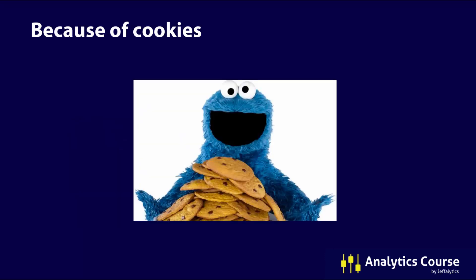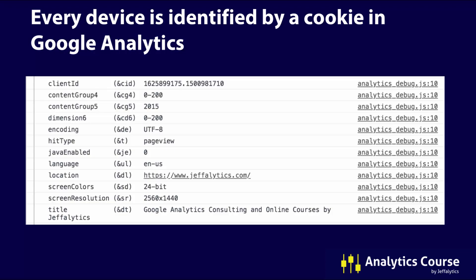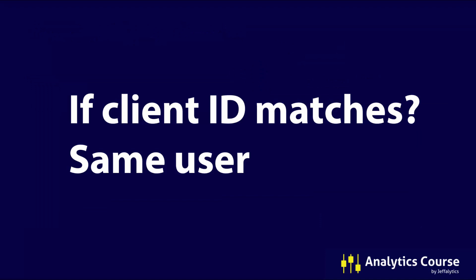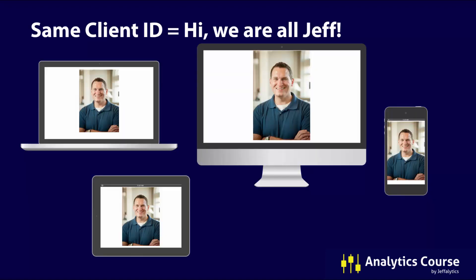Now why is this? It's because of cookies. Every device is identified by a cookie in Google Analytics. Every single device that visits analytics has something called a client ID that gets set whenever somebody comes to the site. This is stored in a cookie for each browser, and it's unique to each browser and each device that you use to access a website. Google Analytics says if a client ID matches between different sessions, they treat them as the same user. So if I had the same client ID across all of these different devices, then we would say, hey, it's all Jeff.